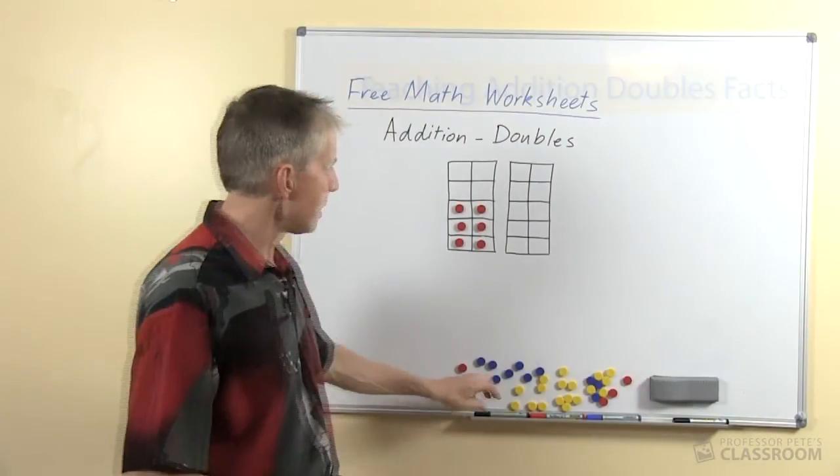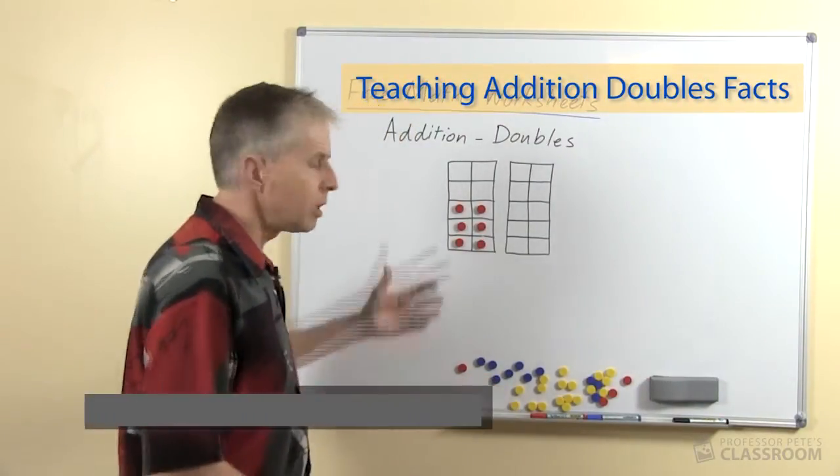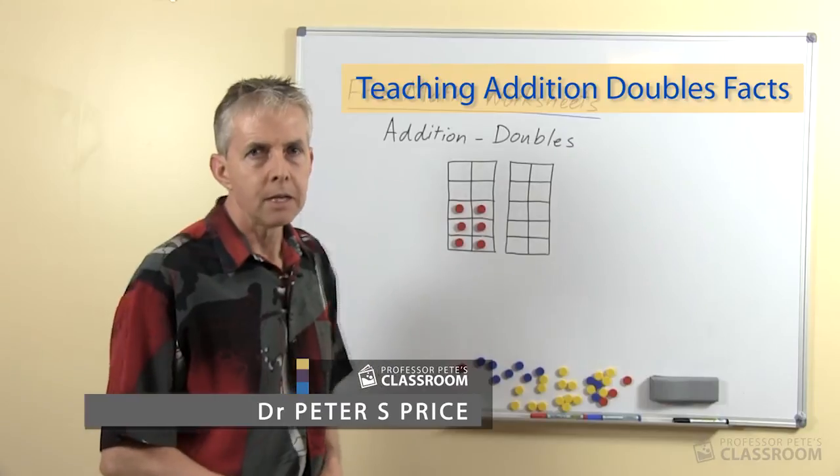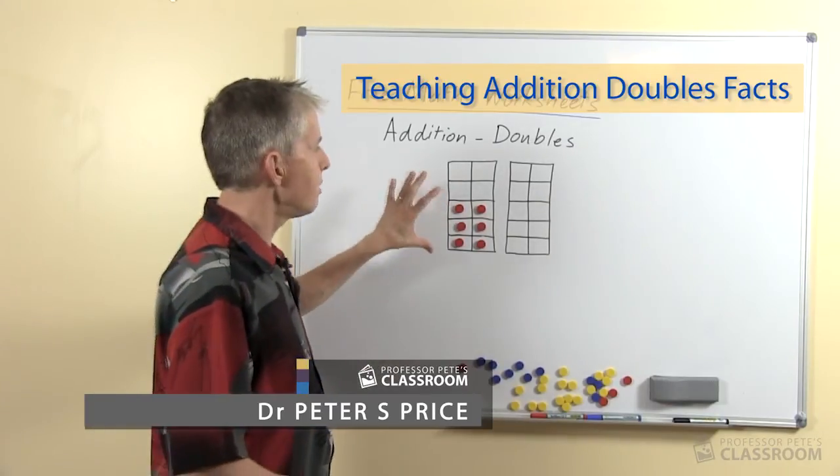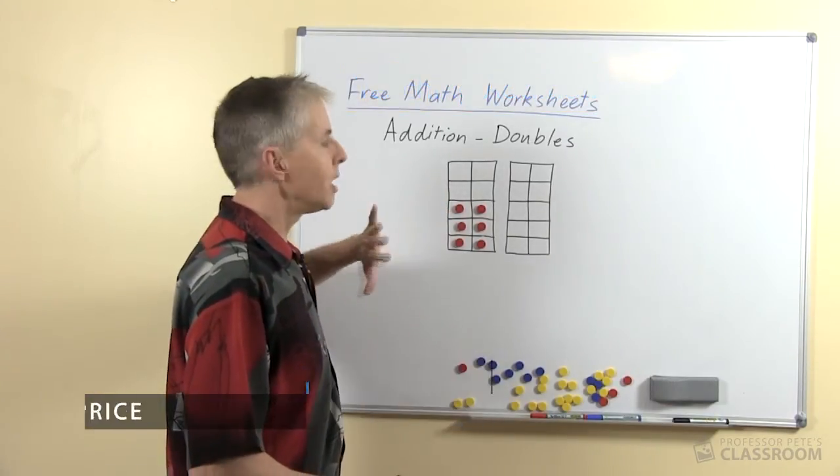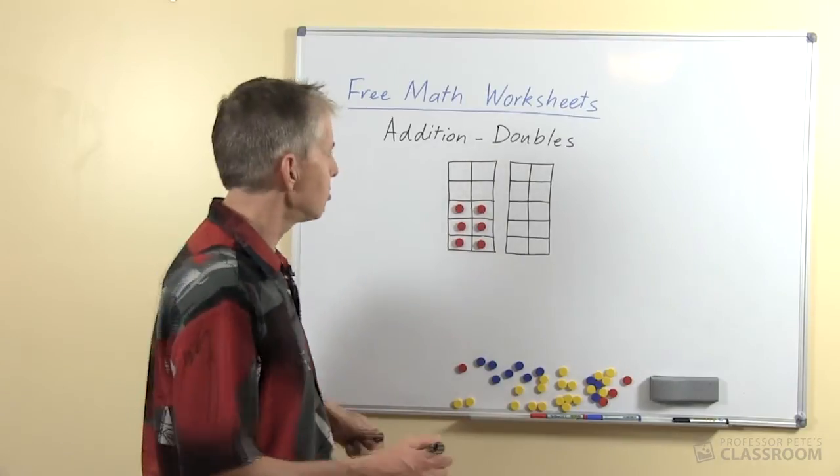We're going to start with the 10 frame and this is showing an example of double 3. We want the students to use the 10 frame to see by looking at it that double 3 is equal to 6.